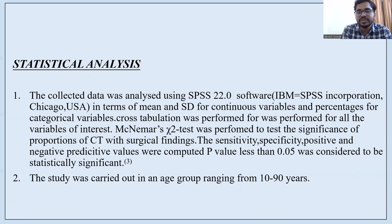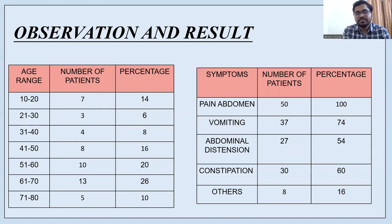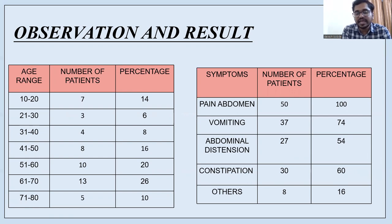The study was carried out in an age group ranging from 10 to 85 years. In the age group of 10 to 20, 7 people had obstruction; 21 to 30, 3 were diagnosed; 31 to 40, 4 patients; 41 to 50 had 8 patients; 51 to 60 had 10; 61 to 70 had 13; and 71 to 85 had 5 patients respectively.